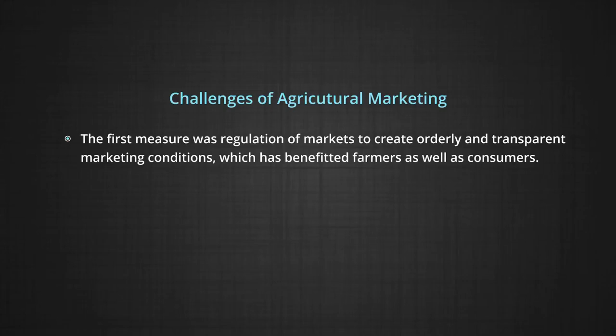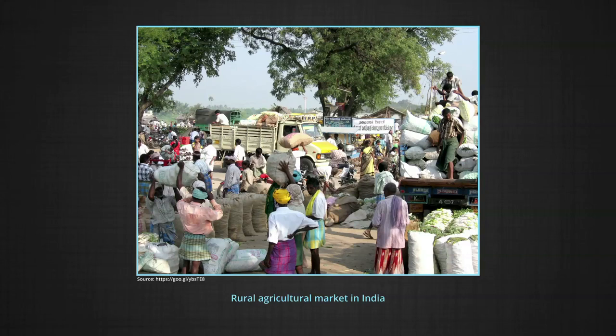What are the challenges of agricultural marketing? Let us discuss some measures initiated to improve the marketing aspect in agriculture. The first measure was regulation of markets to create orderly and transparent marketing conditions, which has benefited farmers as well as consumers. However, there is still a need to develop rural periodic markets as regulated marketplaces to realize the full potential of rural markets.